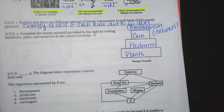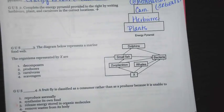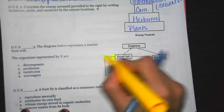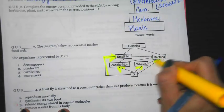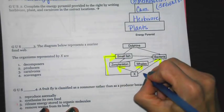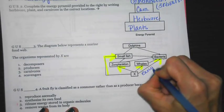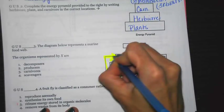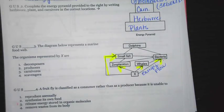The diagram below represents a marine food web. The organisms represented by X are - the big thing is which way are the arrowheads pointing. Remember, the arrowheads represent the energy flow in an ecosystem. Notice, none of the arrowheads are pointing to X. Because of that, it's at the bottom or the beginning of the food chain, food web.